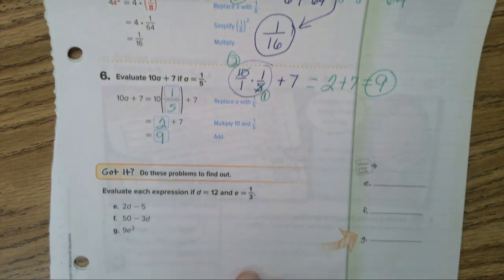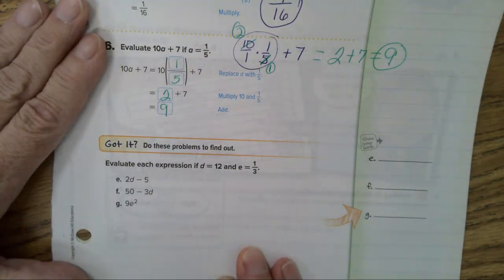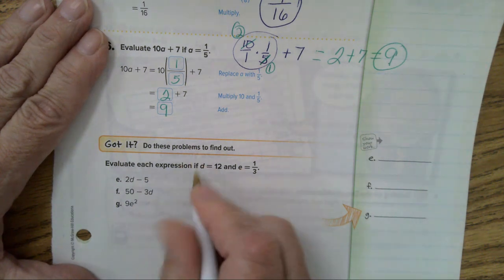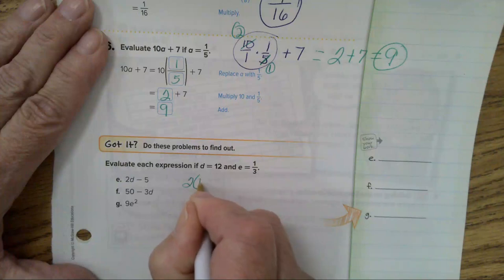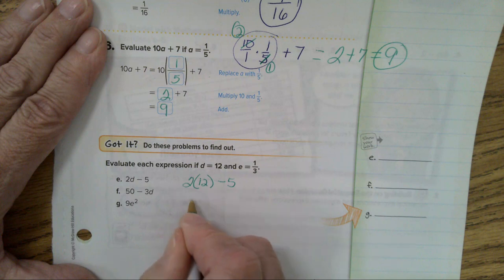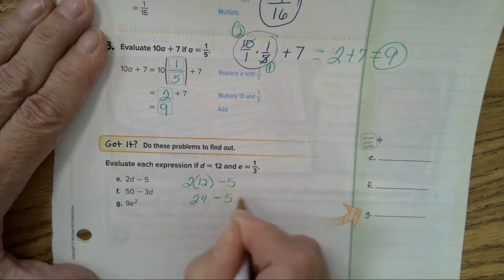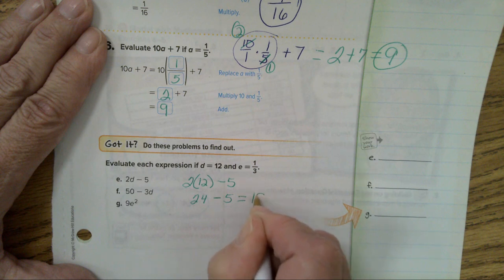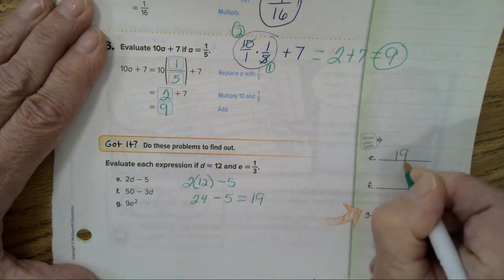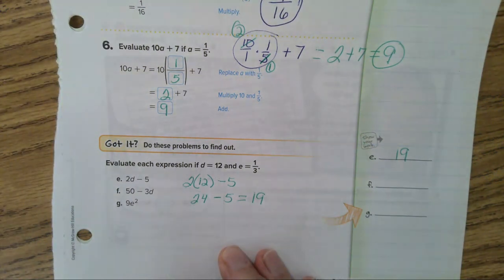Now, let's do E, F, and G. So, letter E, 2 times D, which is 12, minus 5. 2 times 12 is 24. And 24 minus 5 equals 19. So, the answer to the expression is 19.